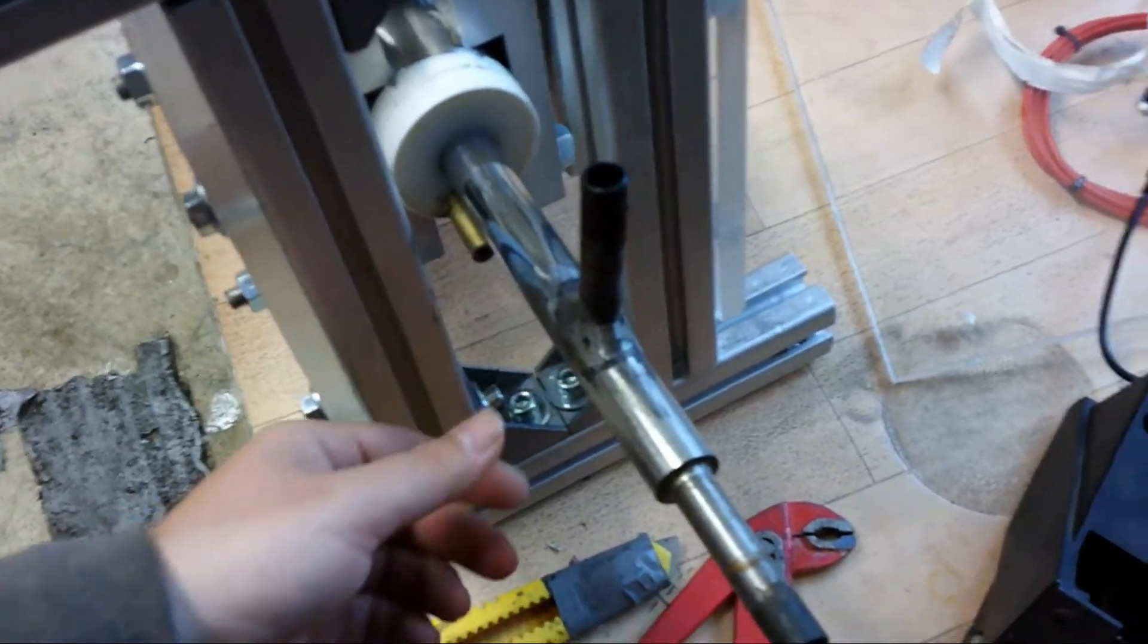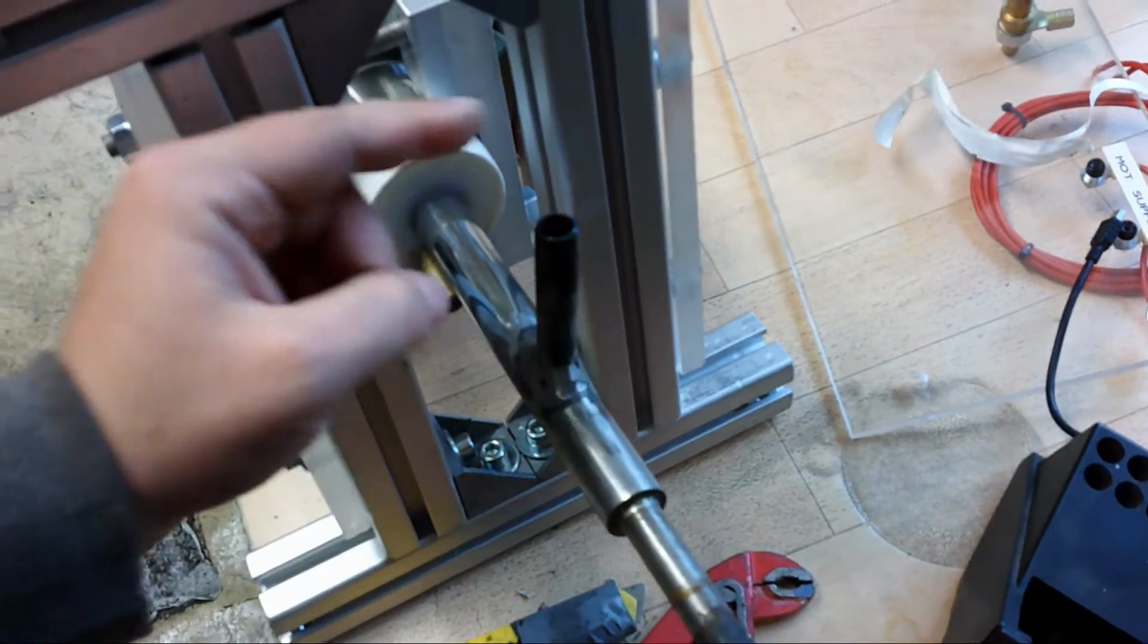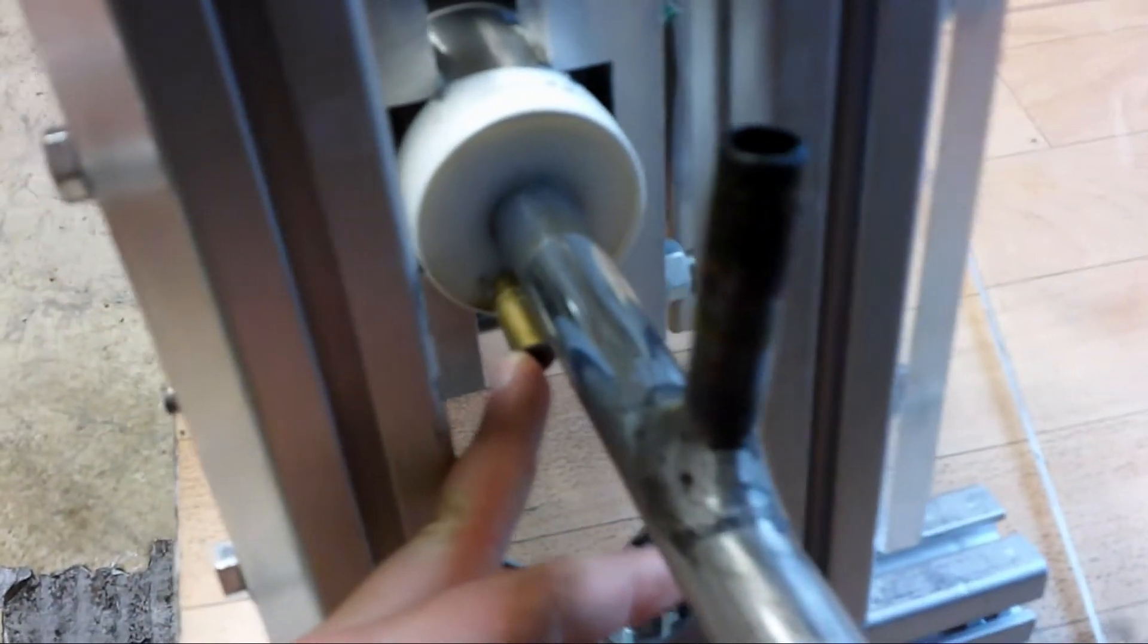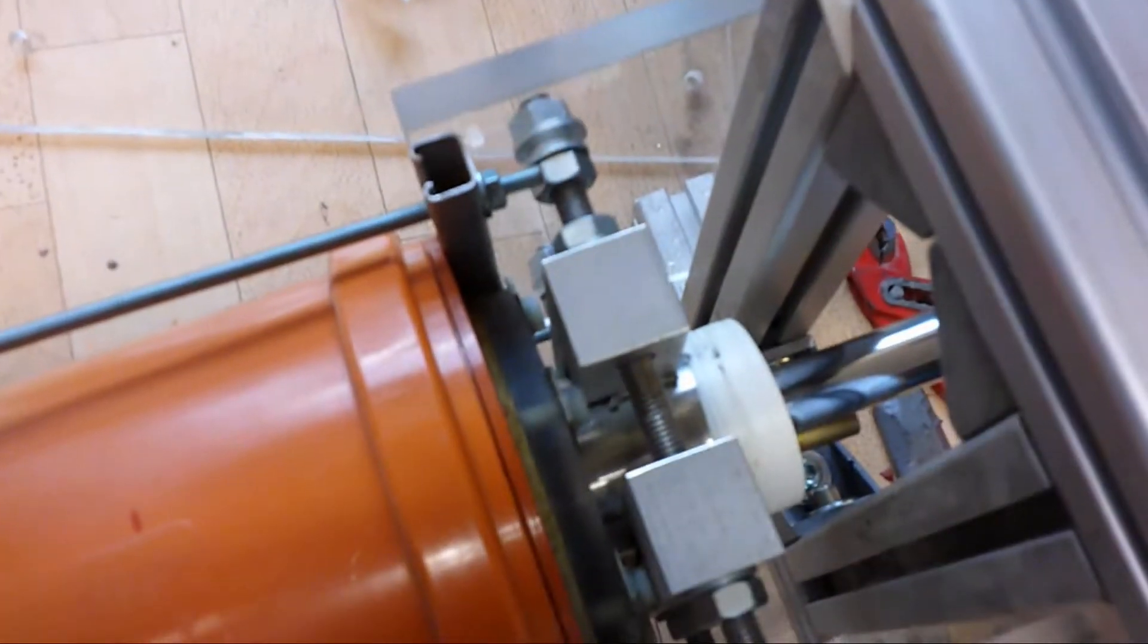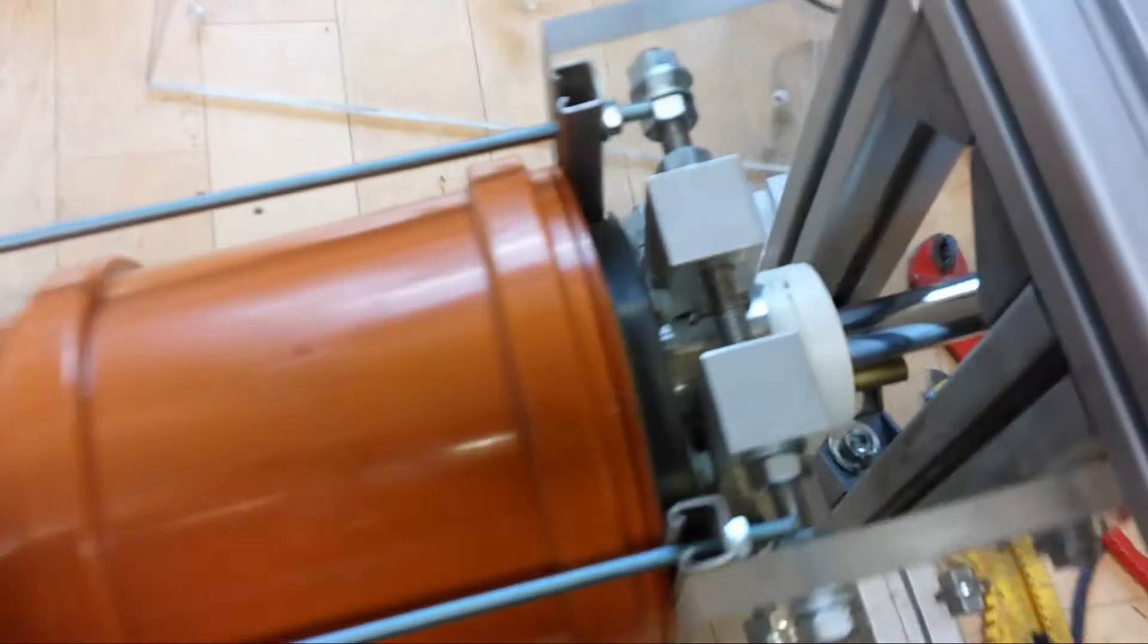So here you can see the inner electrode a little bit better. There is the water cooling of the inner electrode. That is the inlet and that is the outlet. And here was the gas outlet for the NO2 gas. Now I am going to disassemble it completely.